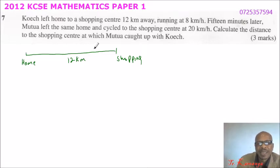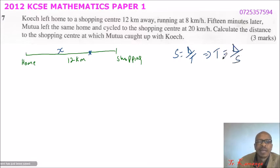So, if we are told that Koech was running, let's say this is the point where they met. And let's assume that the distance covered was X from home to where Mutua caught up with Koech running. We know that speed is equal to distance over time. So, we can imply that time is equal to distance over speed. With that in mind, you can come and say,